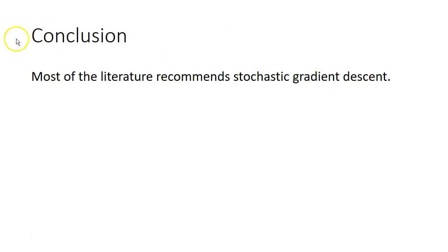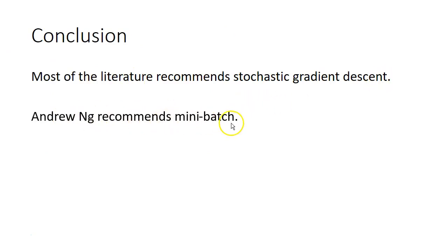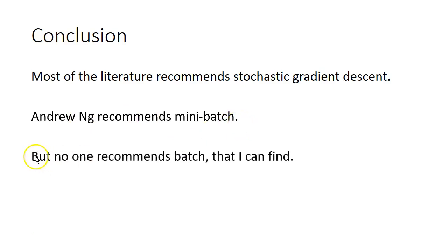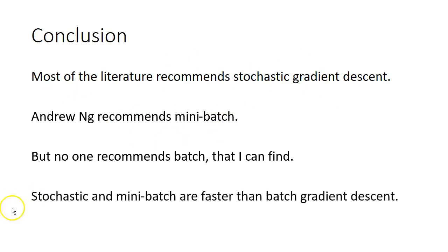So here is the conclusion. Most of the literature recommends stochastic gradient descent. Andrew Ng recommends mini-batch, but he does not recommend batch. No one I can find recommends batch. Perhaps there are specific cases where batch would work better, but the general consensus of the leaders in the field is: do not use batch gradient descent. Most use stochastic, and sometimes perhaps we should use mini-batch. So stochastic and mini-batch are faster than batch gradient descent.